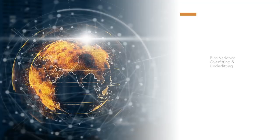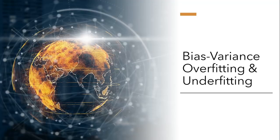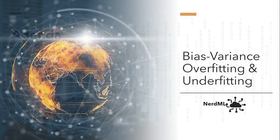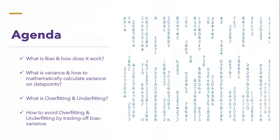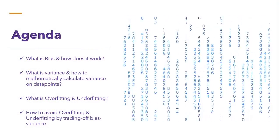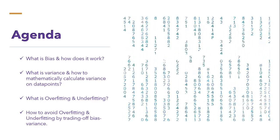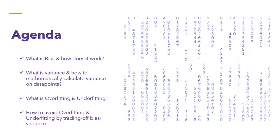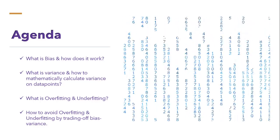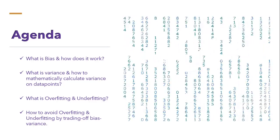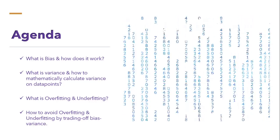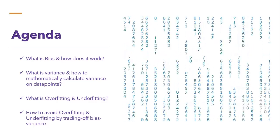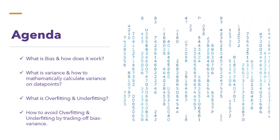Hello world, it's Rahul. Welcome back guys to this machine learning tutorial. Today we will discuss what is bias and how does it work, what is variance and how to mathematically calculate variance on data points, and what is overfitting and underfitting and how to avoid them by trading off bias and variance.